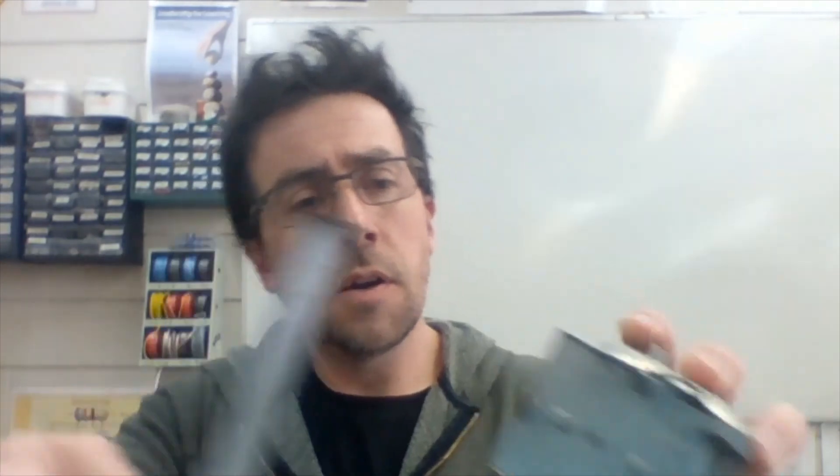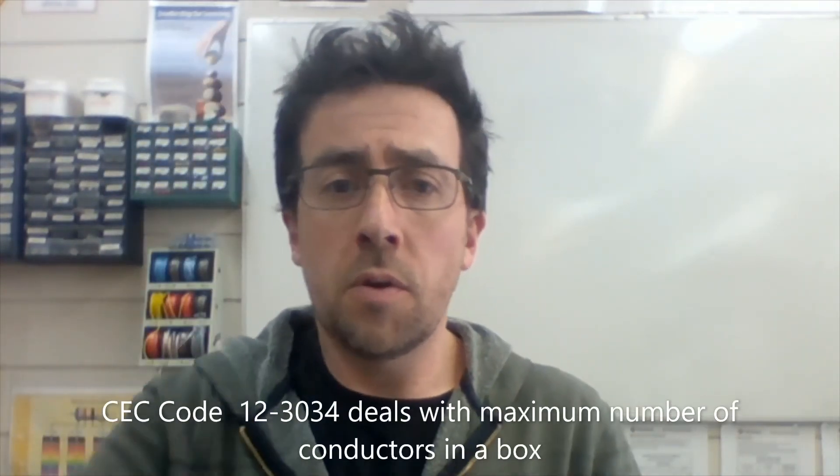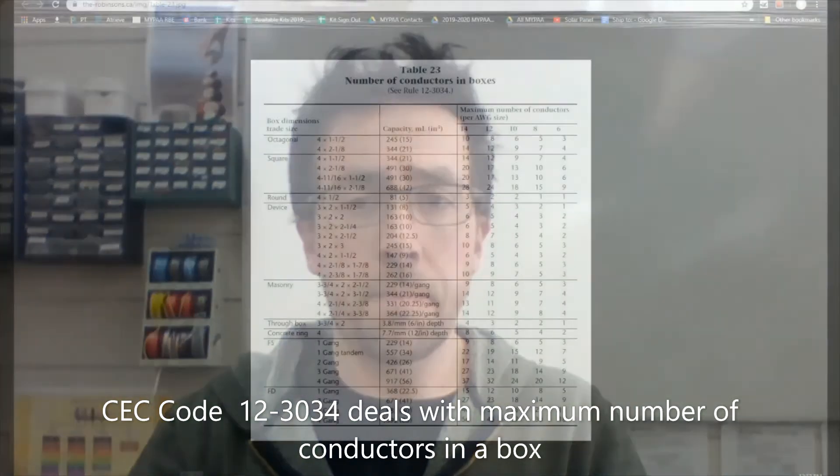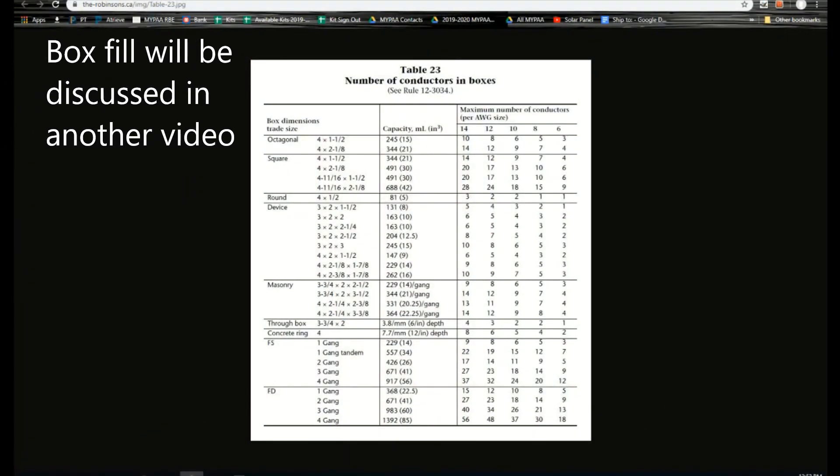I got the device box that we're going to be using here. This one here is a 2 by 2.5 by 2. So if we look at our table 23 in the Canadian electrical code, you will notice that a 2 by 2 by 2.5, we'll be using number 14 gauge wires so we'll be able to shove 8 wires into this box and we'll get into box fill in a few minutes here.